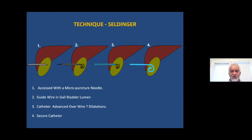In the Seldinger technique, you place the needle first, then place the wire through the needle, take the needle out, and in place of the needle you place the catheter over the wire — because you already have access into the cavity, into the gallbladder in this case. Once the catheter has entered the gallbladder, the wire is taken out and the catheter is left within the gallbladder for drainage.